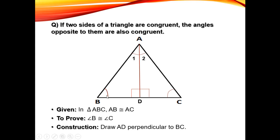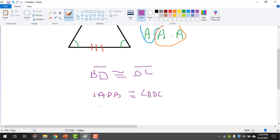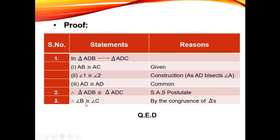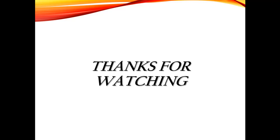Therefore, the third corresponding part gives us that angle B is congruent to angle C. This completes the proof of the theorem: if two sides of a triangle are congruent, then the opposite angles are also congruent. This was the theorem.